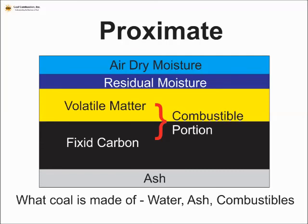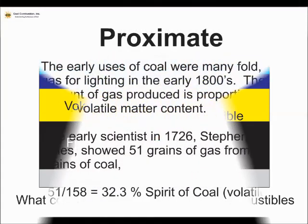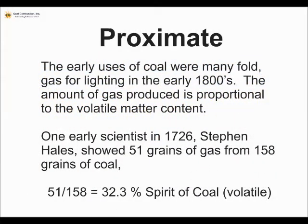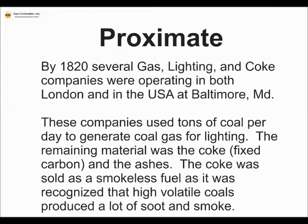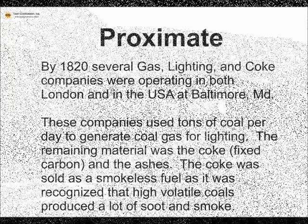Coal consists of ash, fixed carbon, volatile matter, some residual or inside moisture, and the outside or surface-type moisture measured by the air dry loss. The history of this test goes way back — here's a reference from 1726 talking about the spirit of coal. The gas and coking companies were very interested in this.